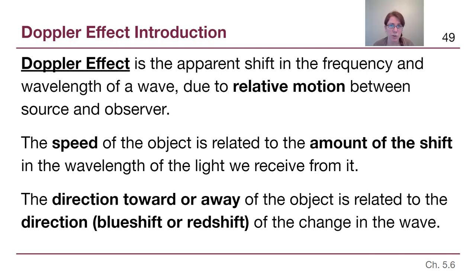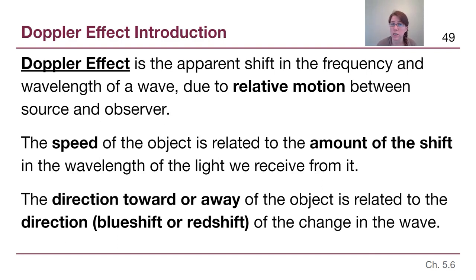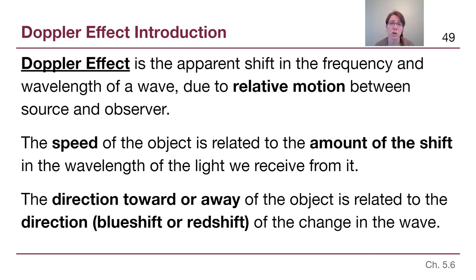The speed of the object — whether we're running towards a speaker or a star is moving away from us — will tell us how much of a change there is. It determines the amount of shift in that frequency or wavelength of the light or sound we receive. The direction of that motion, whether towards or away, will tell us whether we hear a higher or lower frequency sound, or see longer or shorter wavelengths. We'll be introducing the terms blue shift and red shift, and speed tells us the amount of that shift.